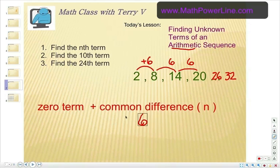And it's going to be a positive 6. We're adding 6 each time. Now again the question is, what's the zero term? So we want to find out before the 2, what number do we start with?